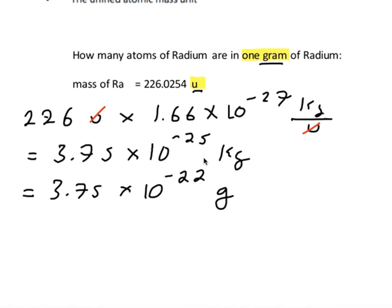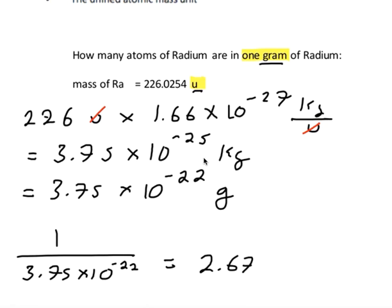Finally, we need to find out how many of these it takes to make up one whole gram. So that's one whole gram divided by 3.75 times 10 to the negative 22 grams, which results in 2.67 times 10 to the 21. And that would be a number of atoms.